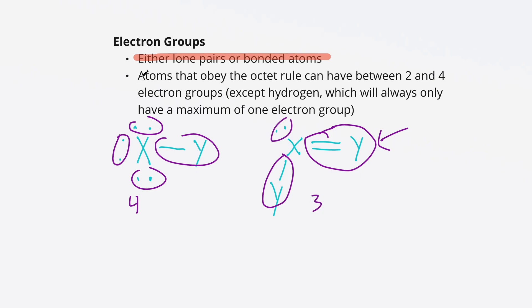Atoms that obey the octet rule can have between two and four electron groups. One really notable exception is hydrogen, because hydrogen only wants a maximum of two electrons, so hydrogen is never going to have more than one electron group. A lot of the time it won't have any, because it loses its one electron very easily.